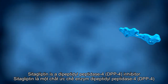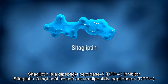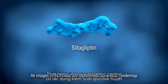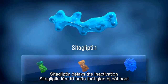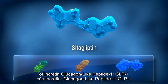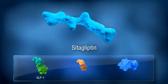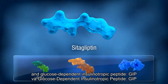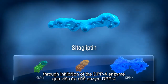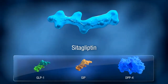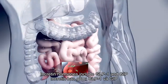Citagliptin is a dipeptidyl peptidase 4 (DPP-4) inhibitor that helps improve glycemic control in a glucose-dependent manner. Citagliptin delays the inactivation of the incretins glucagon-like peptide 1 (GLP-1) and glucose-dependent insulinotropic peptide (GIP) through inhibition of the DPP-4 enzyme.